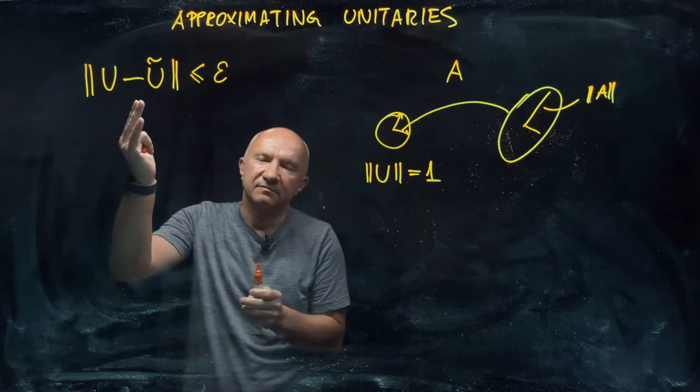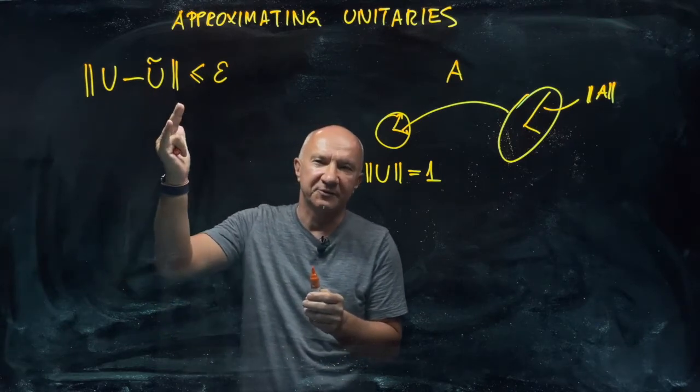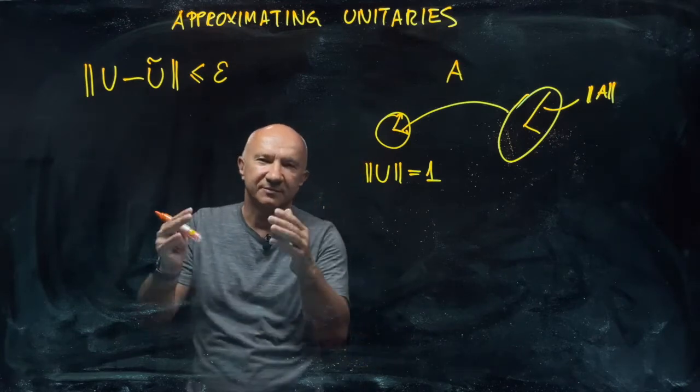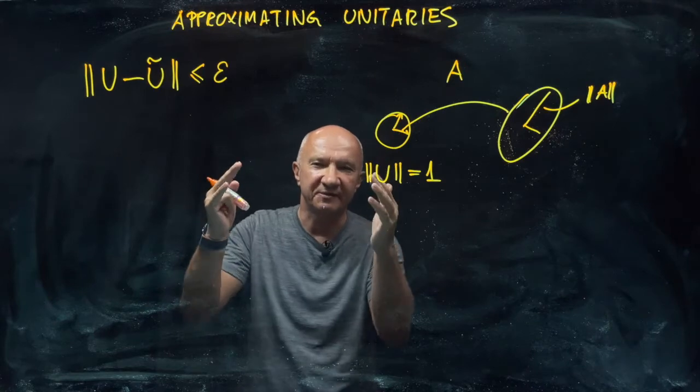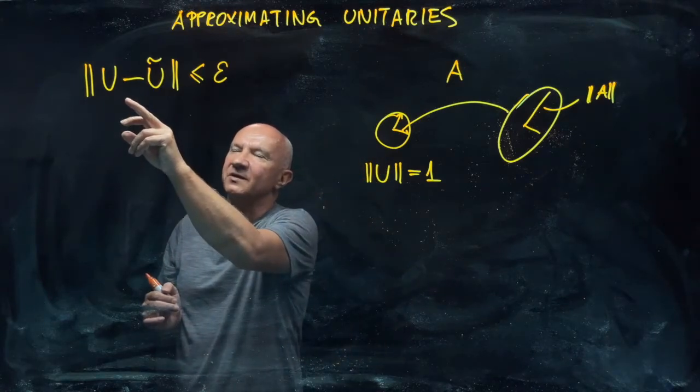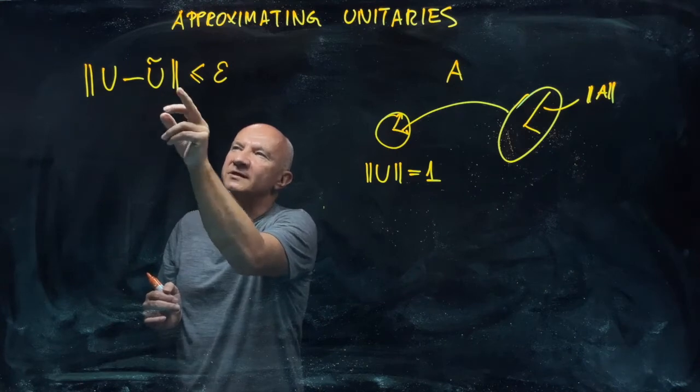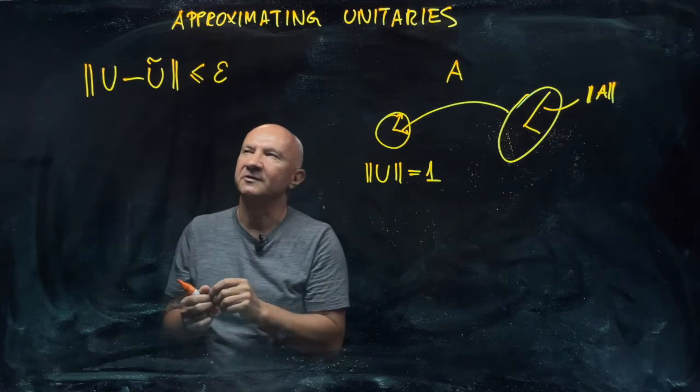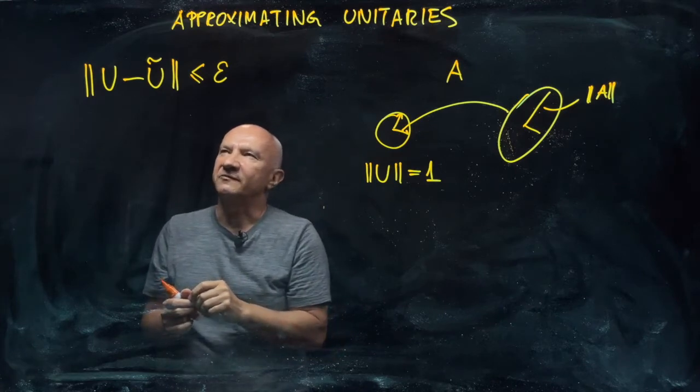Now, it should be clear that this is a good metric because, as any metric, it has to satisfy three properties. And you can see that the distance, if u tilde is the same as u, then the difference is zero. So the distance is zero, so that's fine.